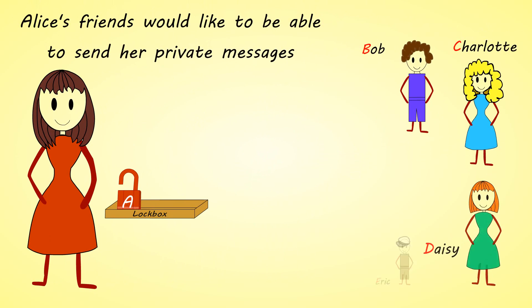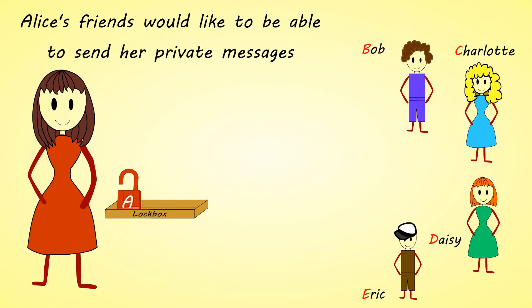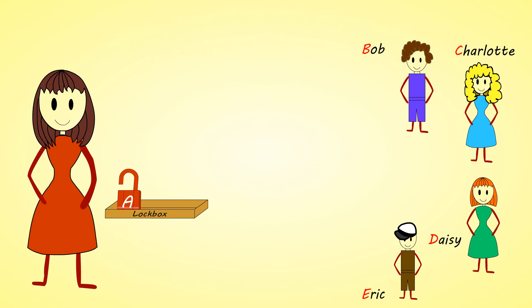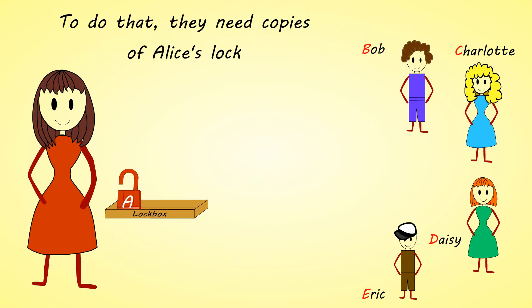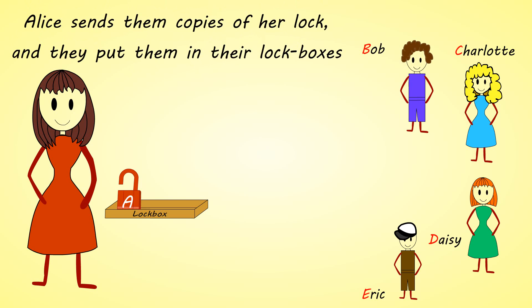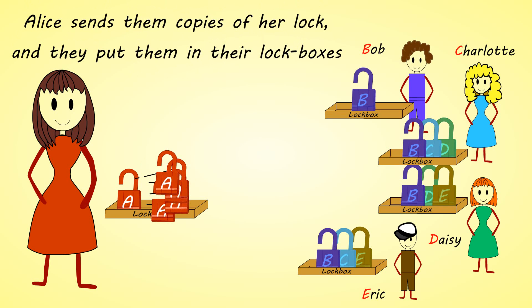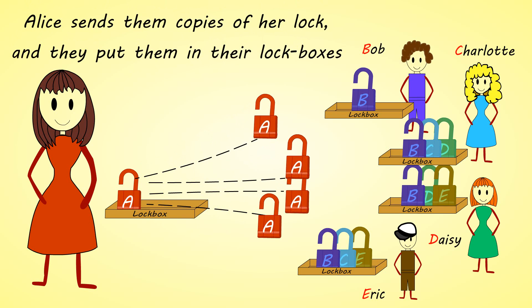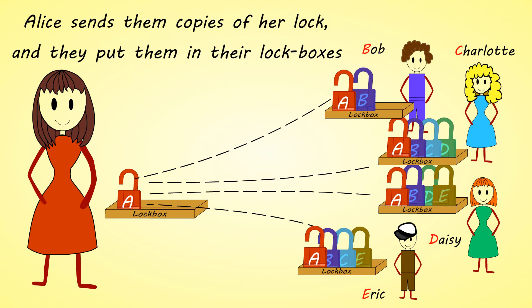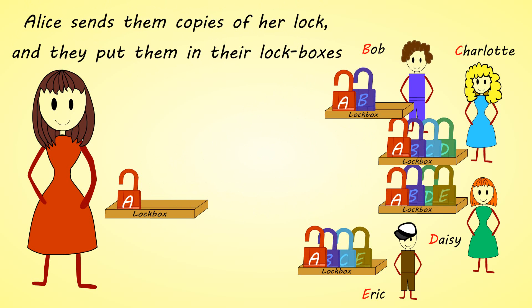Alice's friends would like to be able to send her private messages. To do that, they need copies of Alice's lock. Alice sends them copies of her lock, and they put them in their lockboxes.